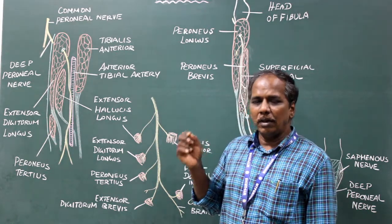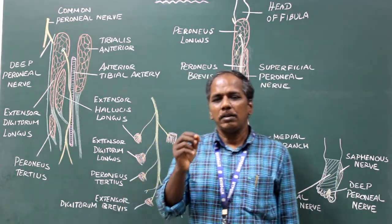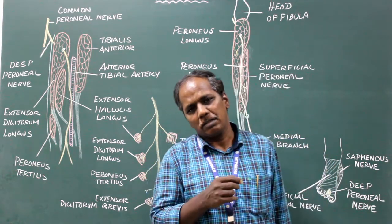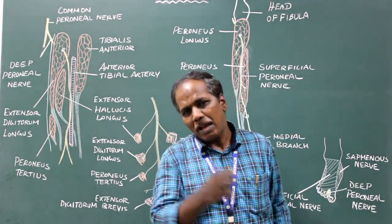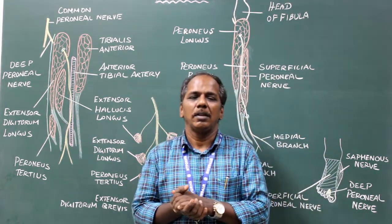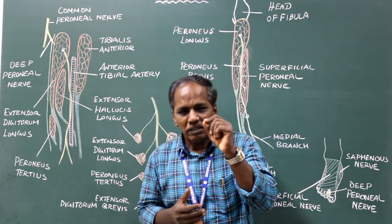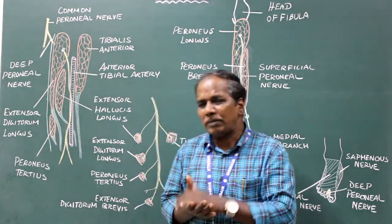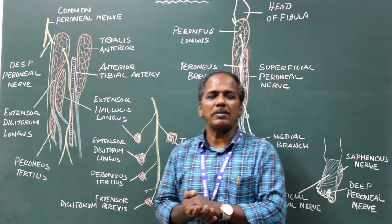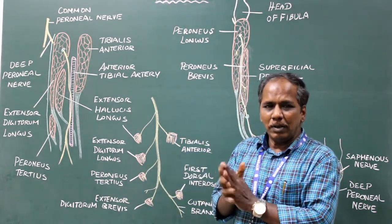The common peroneal nerve is one of the branches of the sacral plexus, or one of the components of the sacral plexus. Its root value is formed by the dorsal division of the anterior primary rami of L4, L5, S1, and S2 spinal nerves. Near the neck of the fibula, the common peroneal nerve divides into two branches: the deep peroneal nerve and the superficial peroneal nerve.